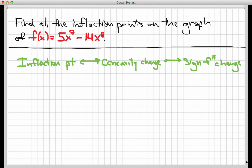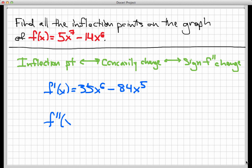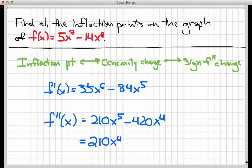First order of business is to actually get that second derivative. Very easy to do since f is a polynomial. f prime, the first derivative, is equal to 35x to the 6th minus 84x to the 5th. Therefore the second derivative, the main object of study here, is going to be 210x to the 5th minus 420x to the 4th. There's quite a bit of factoring we can do — we'll factor out the greatest common factor, which is 210x to the 4th, and we're simply left with x minus 2 as a result.